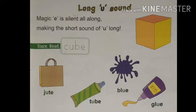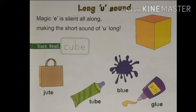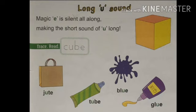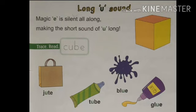Let's see the first word: C-U-B-E, cube. When we pronounce this word, E is silent — E का कोई pronunciation नहीं आ रहा है — but because E is added, the short U sound word changes into a long U sound word. Understood?